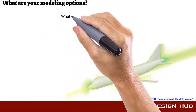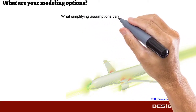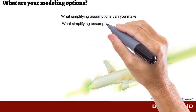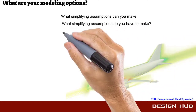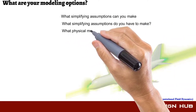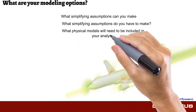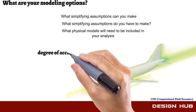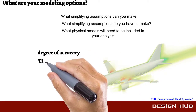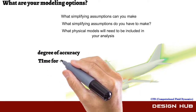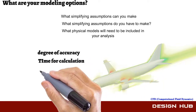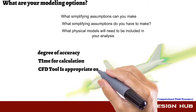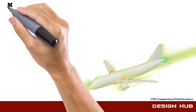The second step is the modeling section. Before CFD calculation, we have to be clear about simplifying assumptions and what you need in the model for proper CFD analysis. We also have to keep in mind how much degree of accuracy we want and how much time we have for calculation, and whether CFD is the appropriate tool for this type of calculation.